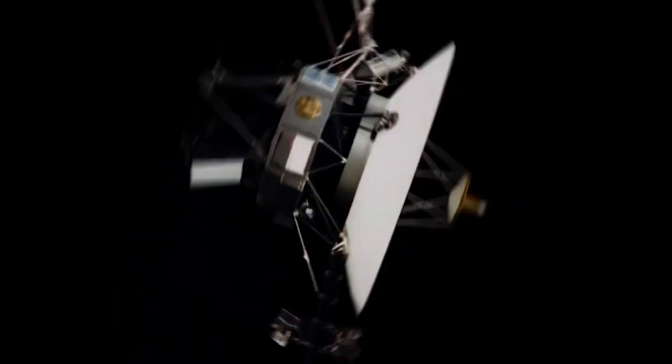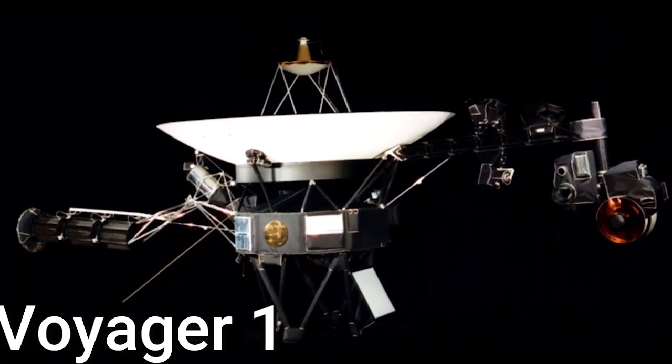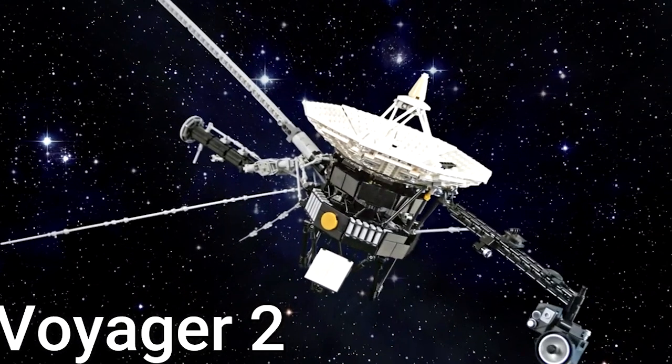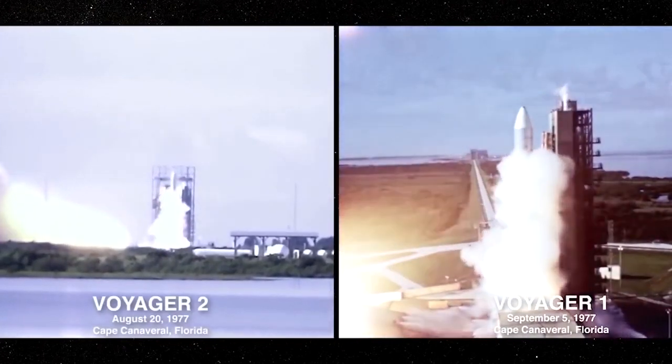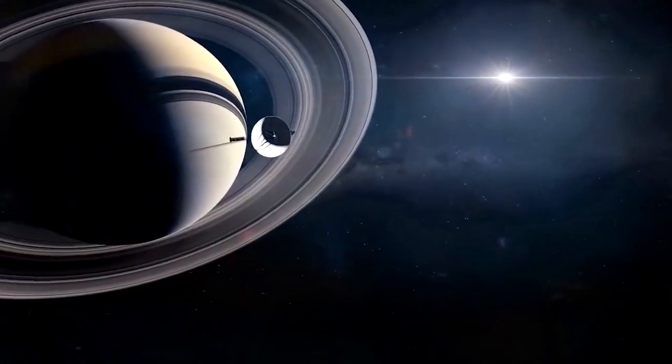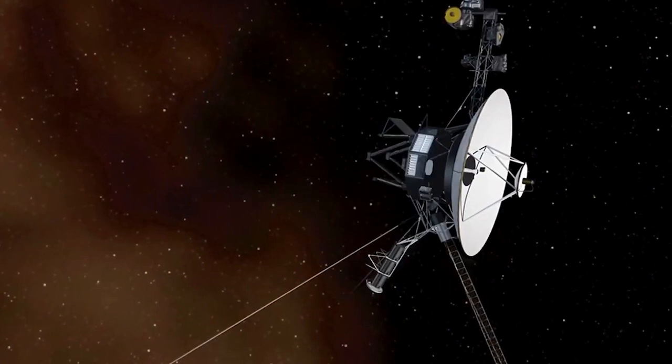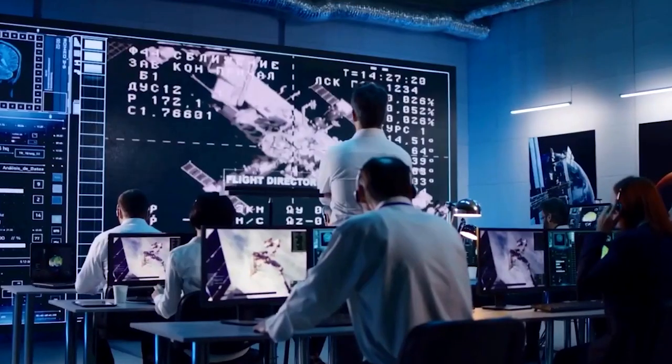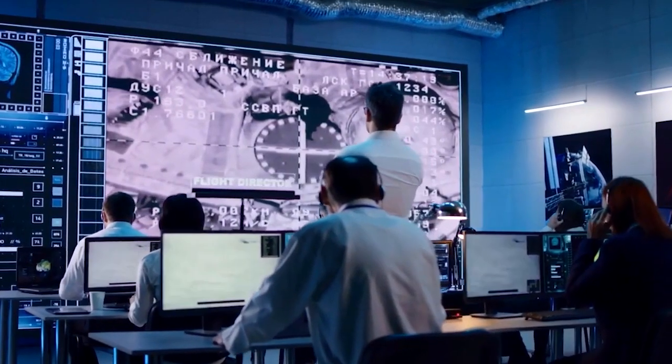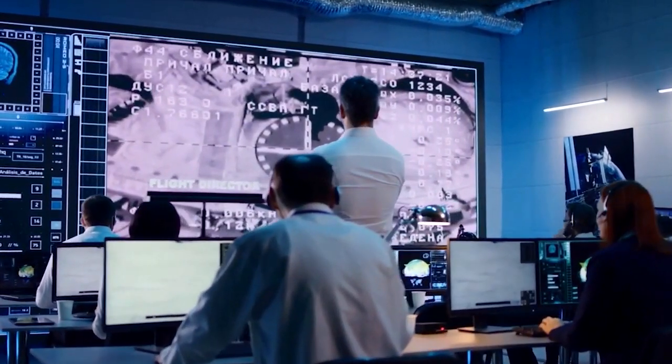The Voyager program consists of two robotic interstellar probes, called Voyager 1 and Voyager 2. They were launched way back in 1977, making the program the longest one in human history. What's even more inspiring is the fact that the probes continue to send back data to Earth to this very day, making them an invaluable tool for space exploration.